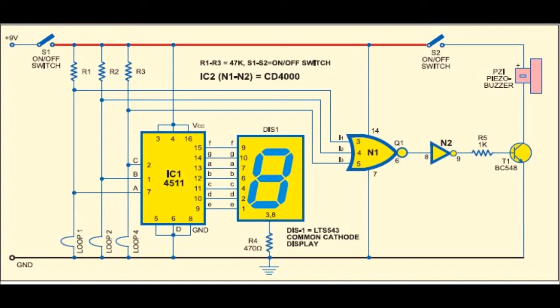This high output is further given to inverter gate N2, and as a result its output remains low. This keeps transistor T1 in cutoff position and the buzzer does not sound.